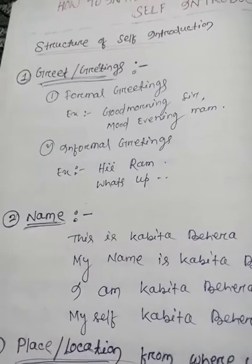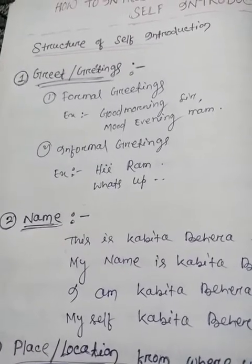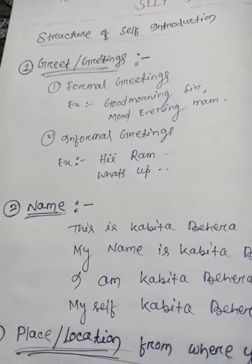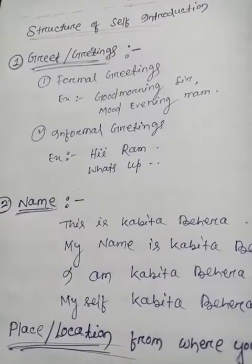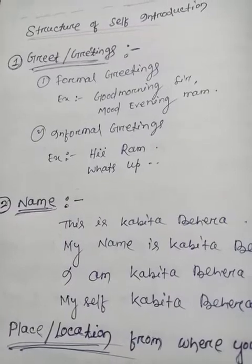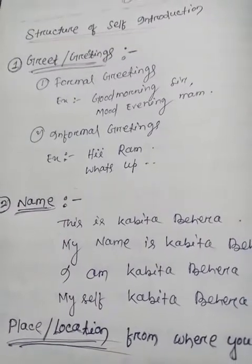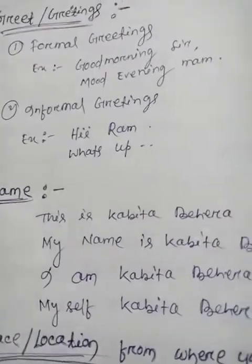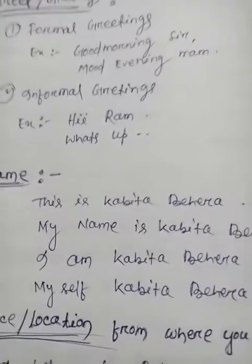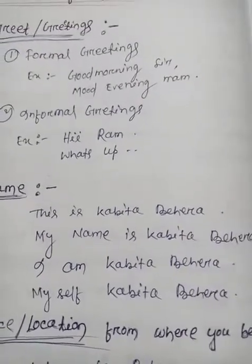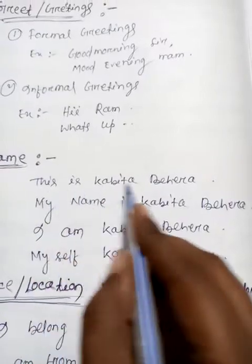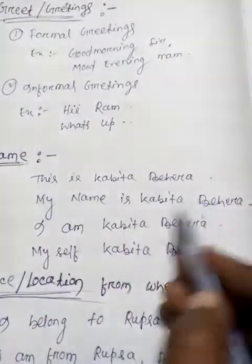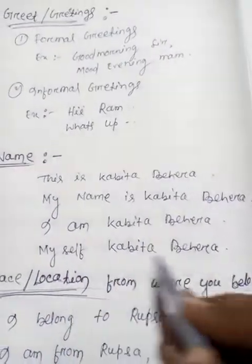The second step is name — you have to tell your name. There are four ways: 'I am Kavita Behera,' 'This is Kavita Behera,' 'Myself Kavita Behera,' and 'My name is Kavita Behera.' Through these four forms, you can introduce your name.